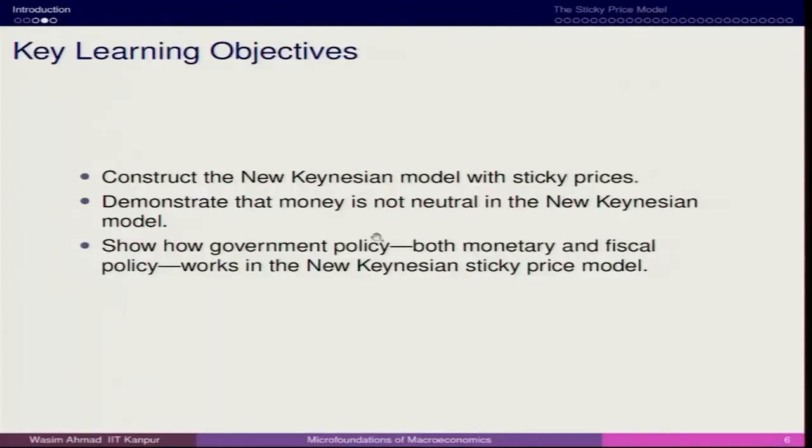The reference book remains the same: Stephen D. Williamson. We will also be adding one more book — Mankiw — and from that we will look at the dynamic aggregate demand and aggregate supply perspective. Otherwise the major textbook remains Stephen D. Williamson. Here we have the new Keynesian model with sticky prices and how money is not neutral — that remains the same.